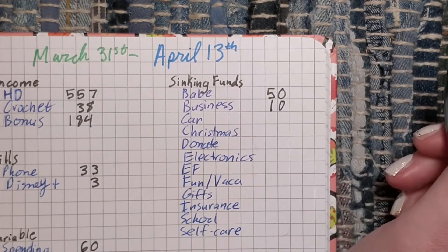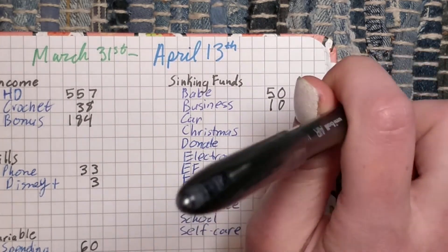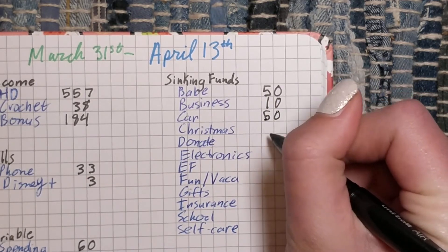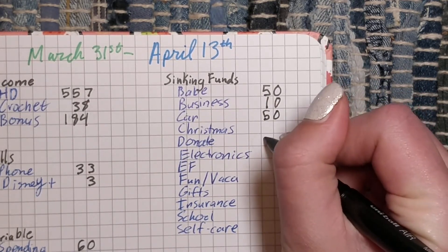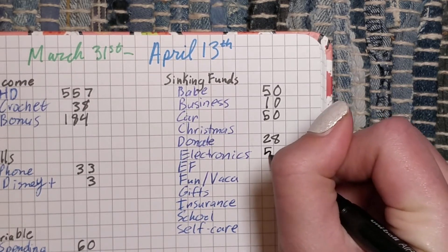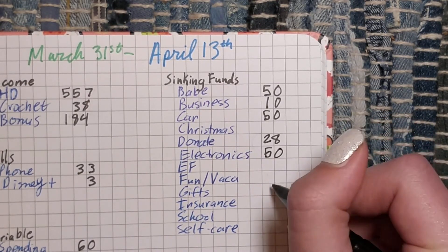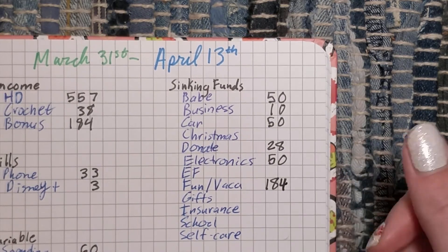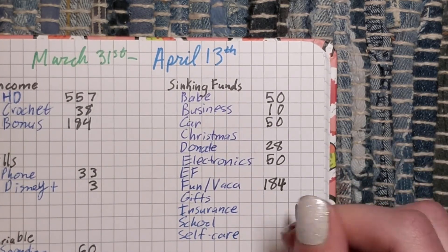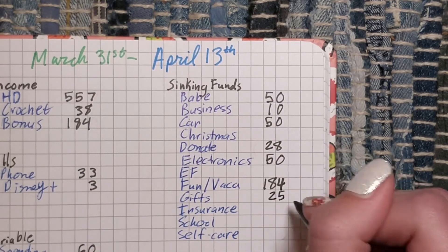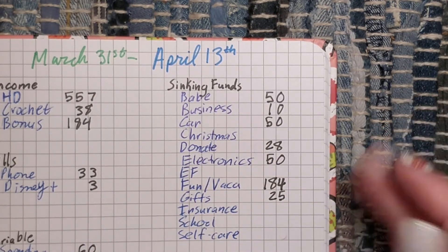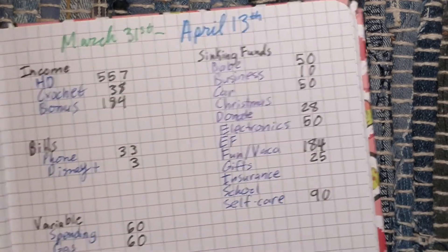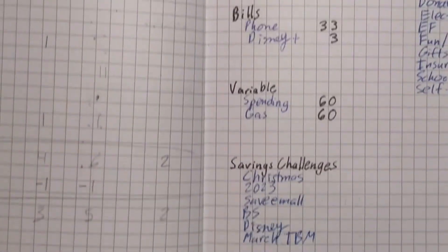By the time you see this, his birthday will already have passed, but if you want to leave him birthday wishes you can comment below. Car is getting $50, Christmas not getting anything, donate $28, electronics $50, emergency fund. The bonus money is going into fund slash vacay. It's not for vacation per se, it's something that my boyfriend and I are doing. I'm not going to say what it is because it can be somewhat controversial. No, we're not getting married, we're not eloping, it's not happening yet. That's money set aside for a different day. But it's something we're doing together and it's important in my eyes.